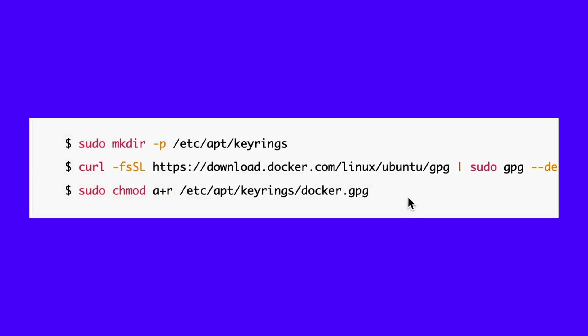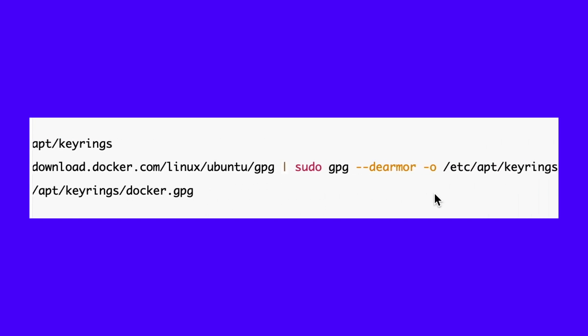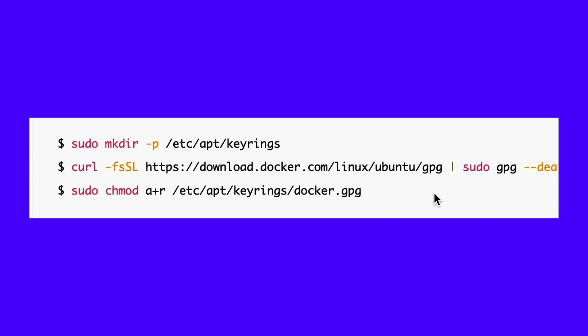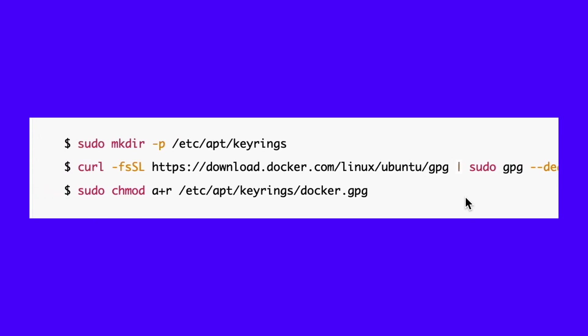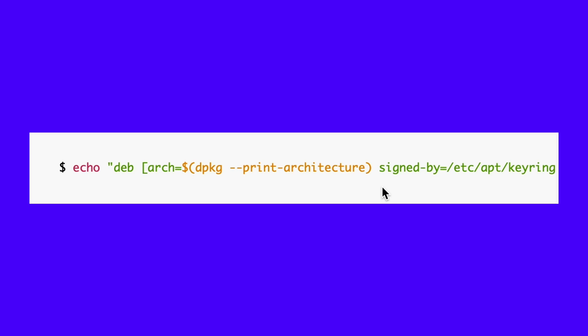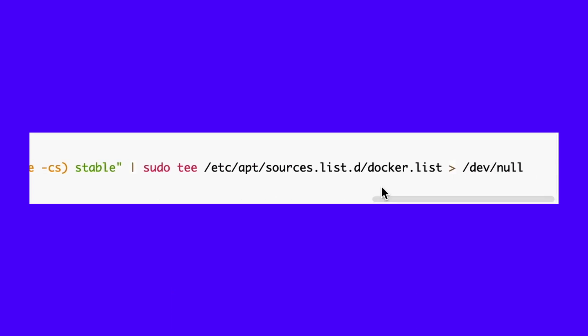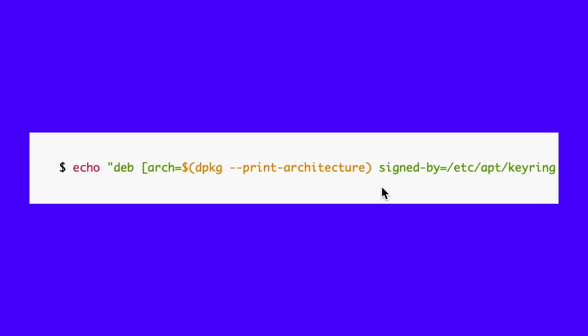Next, register Docker's GPG keyring with apt. This will let apt validate the Docker packages you install. The cURL command downloads Docker's GPG key for Ubuntu, converts it back to standard OpenGPG encoding, and saves it to apt's keyring directory. chmod is used to set the permissions on the keyring file so that apt detects it reliably. Now you can add the Docker package source to your system. This uses shell substitution to automatically detect your system's architecture, such as AMD64 or ARM64, and download the appropriate package list. It will be verified using the GPG key added earlier. The repository is added as a new package list inside the apt directory.